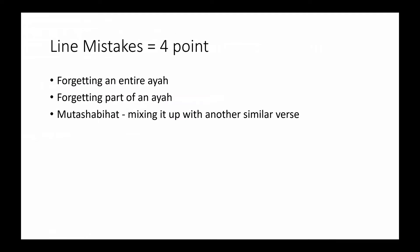The second type is the line mistake, which is worth four points. If you've forgotten a part of the line that is four words or more, consider it a line mistake. Line mistakes show the page is becoming weaker — when they start coming, the interval starts getting affected and reduced.